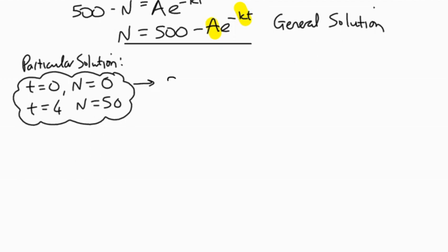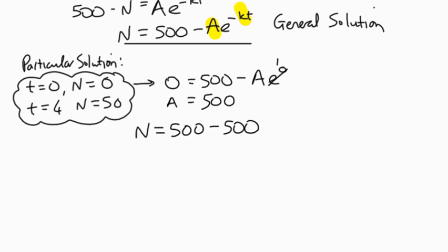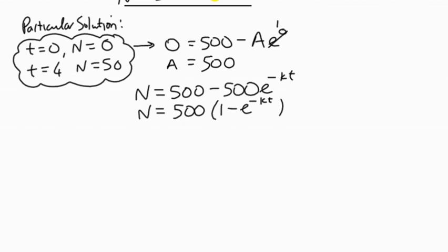So when t equals zero, n equals zero. From the first one, we can say that zero equals 500 minus a. If t equals zero, then that whole exponent there is zero, that goes to one. So we're told that zero equals 500 minus a, so a is equal to 500. In other words, we now can say that n equals 500 minus 500 e to the negative kt, or we could say that it's 500 times 1 minus e to negative kt. That's us partly done. We've got one constant calculated.